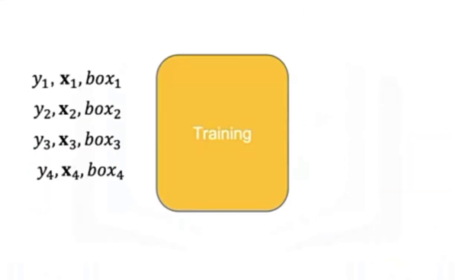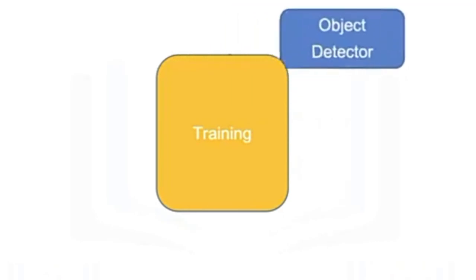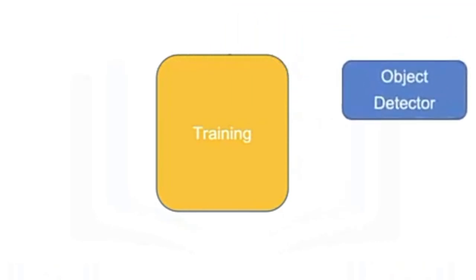Similar to classification, we use the data set to train the model. We include the box coordinates. The result is an object detector with updated learning parameters. We will discuss the specific models in training later.